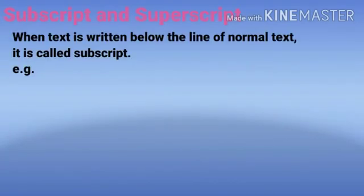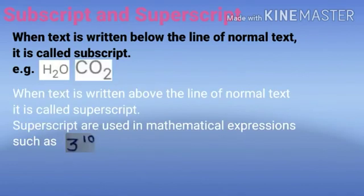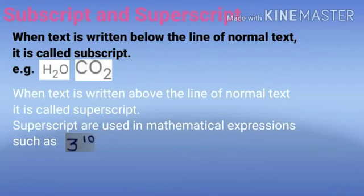Subscript and Superscript. When text is written below the line of normal text, it is called subscript. For example, S₂O is the formula of water and CO₂ is the formula of carbon dioxide. When text is written above the line of normal text, it is called superscript. Superscripts are used in mathematical expressions such as 3 to the power 10.